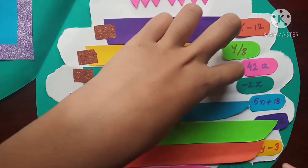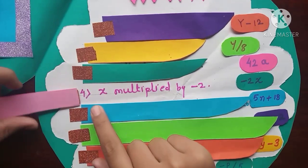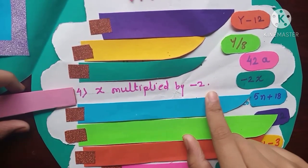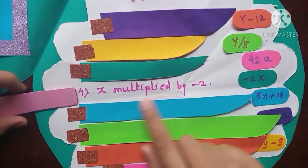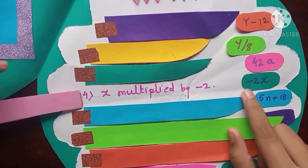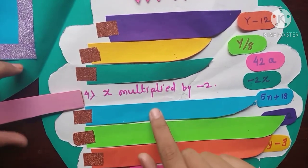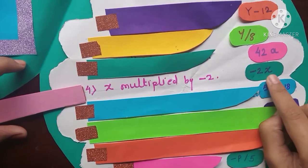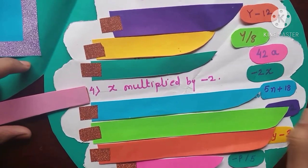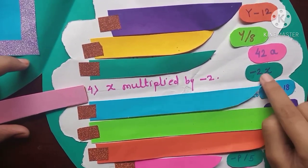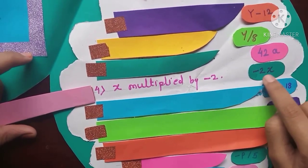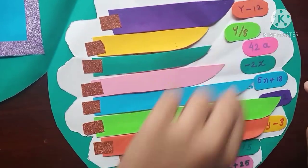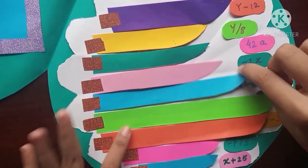The fourth question is: x multiplied by minus 2. Multiplied means 'into', so the answer is minus 2 into x. Since there is a letter, we don't need to put the multiplication sign, so it is written as minus 2x.